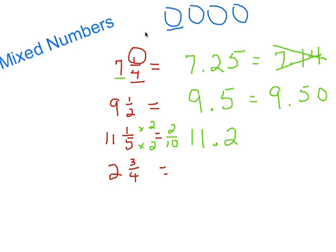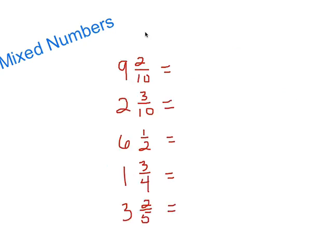Finally, two and three-fourths. When dealing with fourths, always think of quarters — that will help you. Two point... and three out of four quarters is seventy-five cents, so two and three-fourths equals two and seventy-five hundredths, or 2.75.